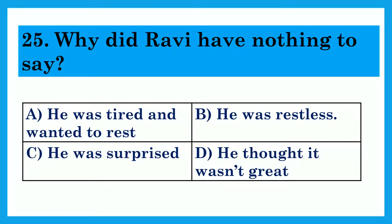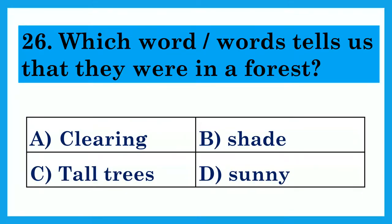Why did Ravi have nothing to say? Option A: He was tired and wanted to rest. Option B: He was restless. Option C: He was surprised. Option D: He thought it wasn't great. The answer is Option D: He thought it wasn't great. Which word tells us that they were in a forest? Option A: Clearing. Option B: Shade. Option C: Tall trees. Option D: Sunny. The answer is Option A: Clearing.